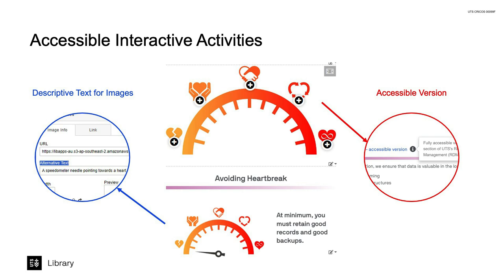We also provided descriptive alt text for each image, ensuring visually impaired users can understand the content through screen readers. One section of the module uses an interactive graphic element that we really liked but could not make accessible. The solution we employed was to create an accessible Word document version of this section, which can be downloaded from the top of the page.